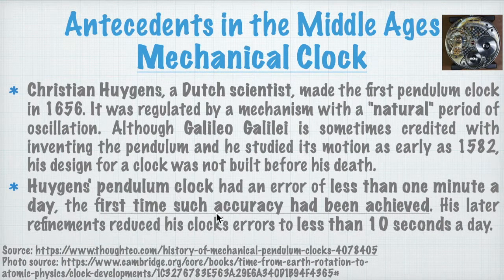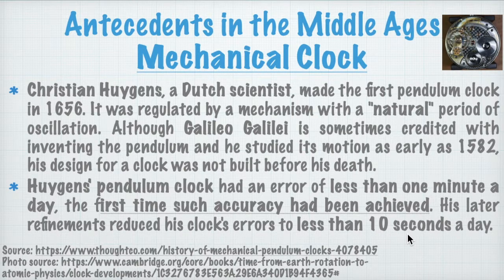Huygens's pendulum clock had an error of less than one minute a day — the first time such accuracy had been achieved. Later refinements reduced the error to less than 10 seconds a day, which was a great achievement for those times, though 10 seconds per day would accumulate significantly over time. Most clocks we have today are as accurate as possible, provided the batteries are new.